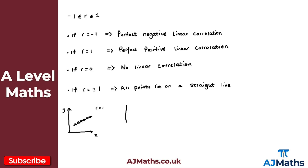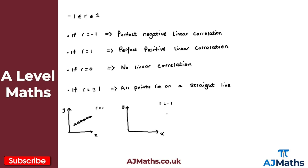Now let's look at r equals minus one. Again, all the points lie on a straight line, but now we start in the top left and work down to the bottom right. All these points lie on a straight line — that's an example where the PMCC is equal to minus one.